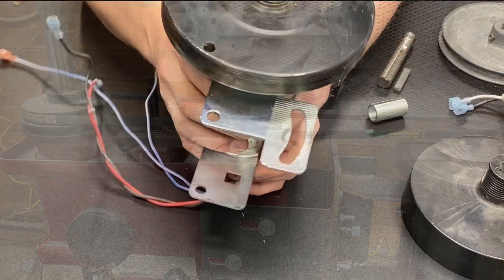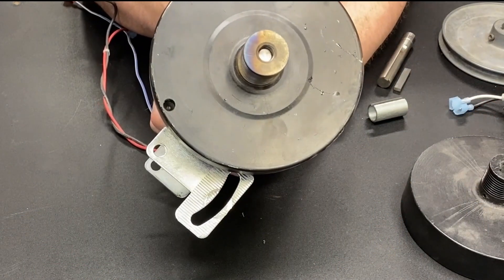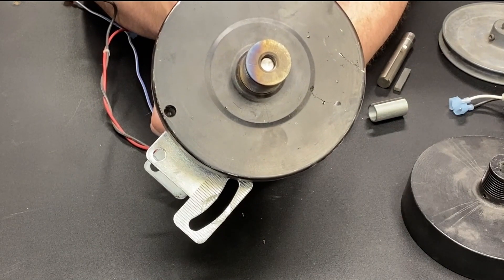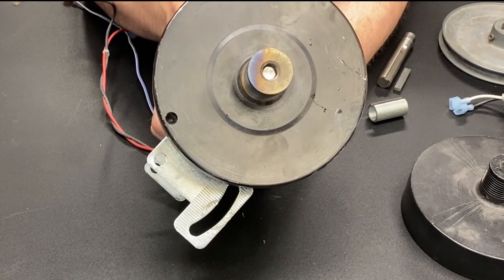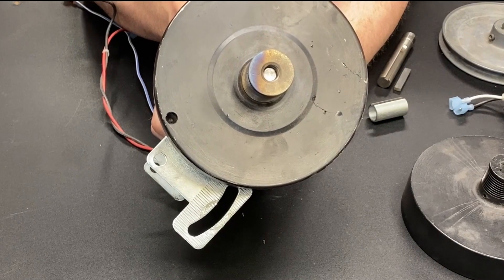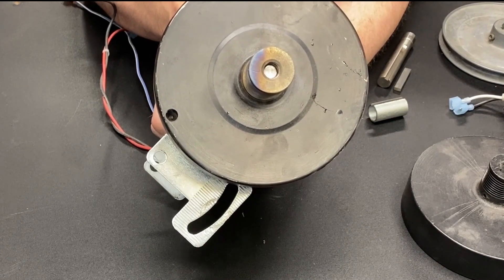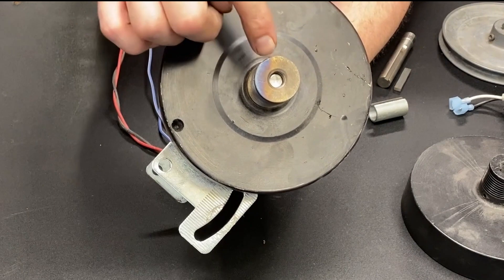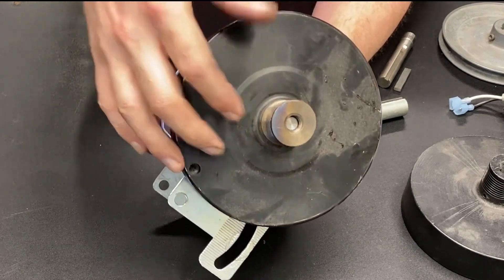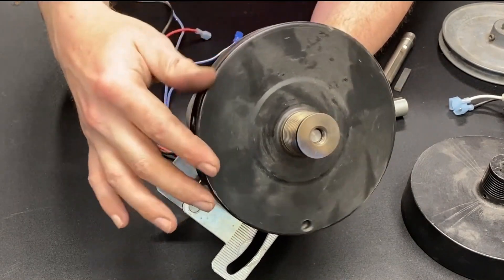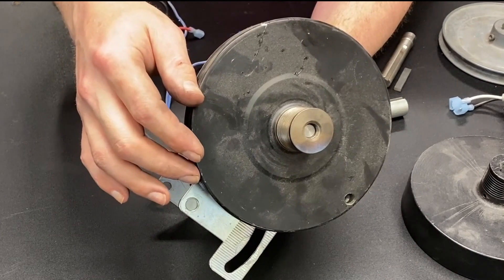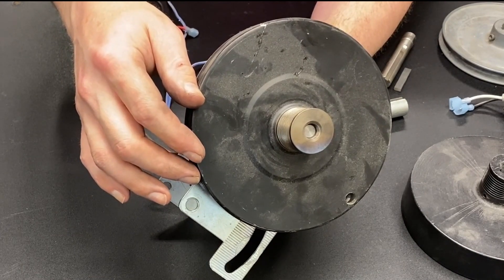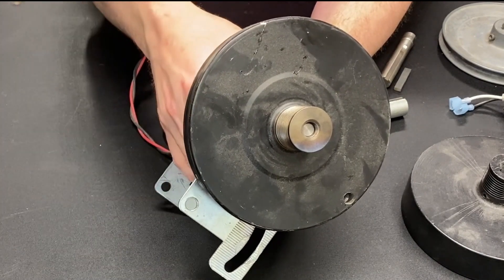The other thing that's important to know, if you have a thread-on flywheel, especially on smaller motors like the one in my hand, they are oftentimes Loctited in place. The only way to get them loose is to apply heat. You can see maybe on there a little bit of discoloration, where I hit that with a torch. After getting it fairly hot, I was able to spin it off.